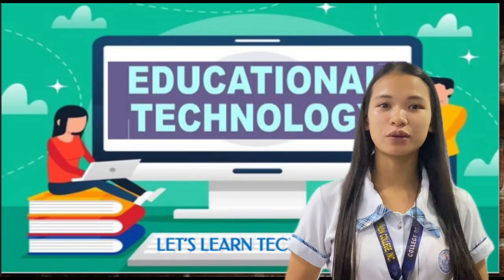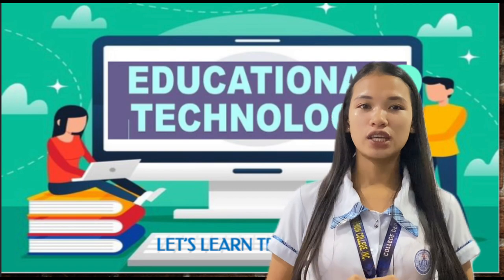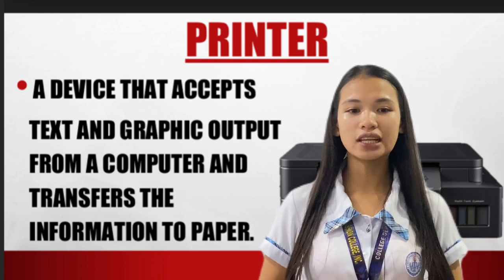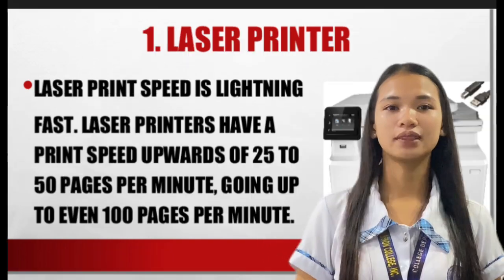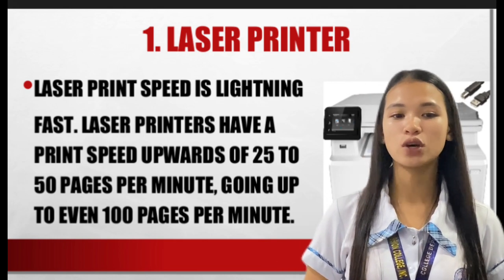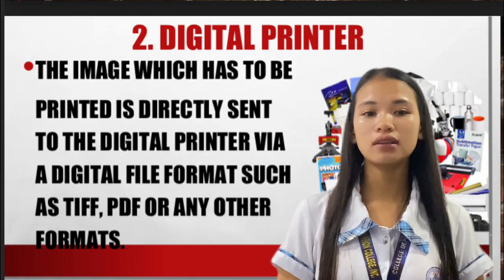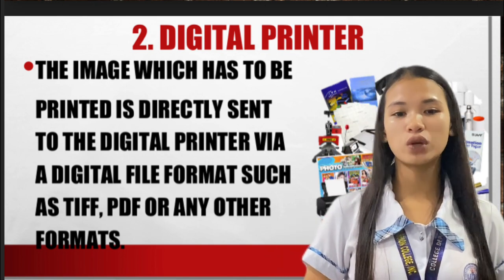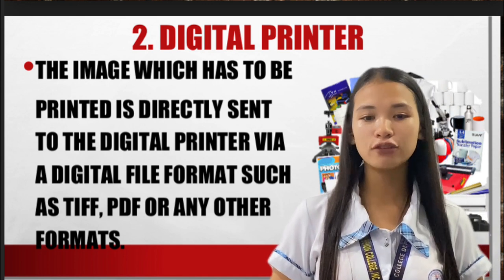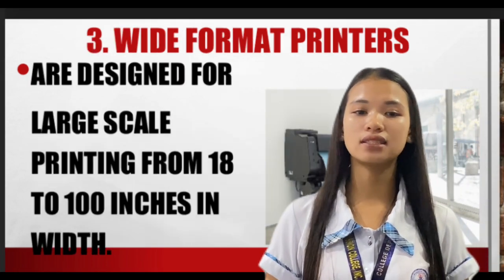Good day. I am Cheryl Asaberon. Now I will discuss the different types of printer. A printer is a device that accepts text and graphic output from a computer and transfers the information to paper. The first type is the laser printer. Laser print speed is slightly fast — laser printers have a print speed upwards of 25 to 50 pages per minute, going up to even 100 pages per minute. The next one is the digital printer. The image to be printed is directly sent to the digital printer via a digital file format such as TIFF, PDF, or any other formats.